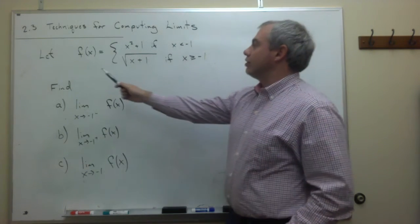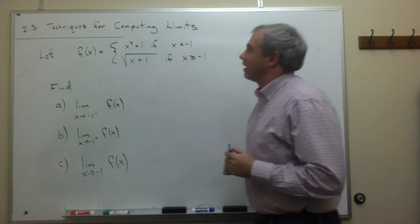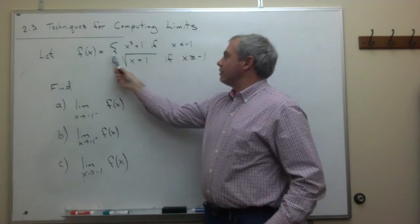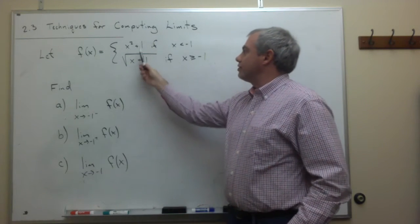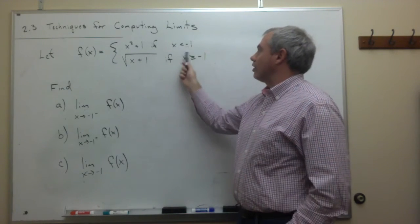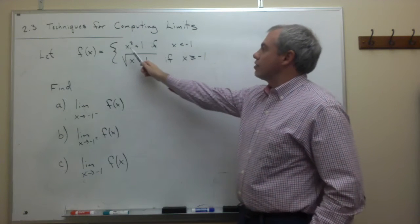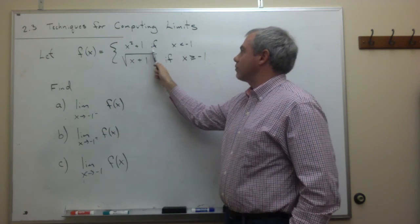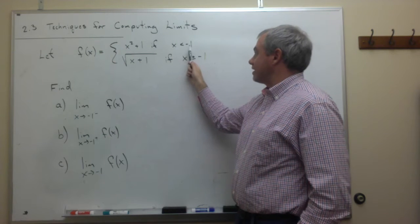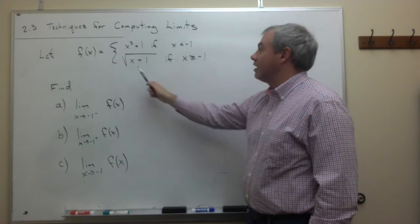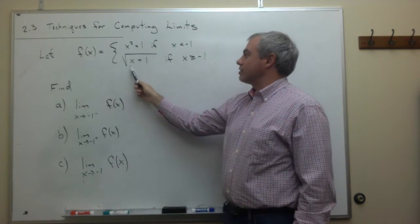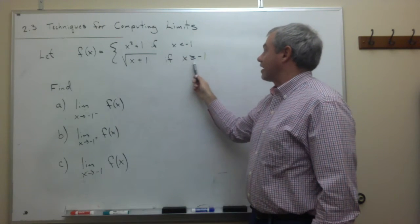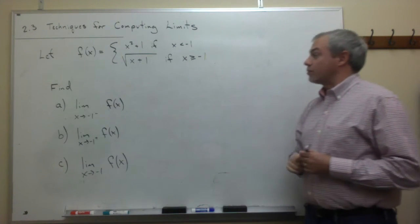We're going to be looking at a piecewise defined function. f(x) can be one of two things depending on where the x values are. f(x) equals x squared plus 1 if x is less than minus 1, and f(x) equals the square root of x plus 1 if x is greater than or equal to minus 1.